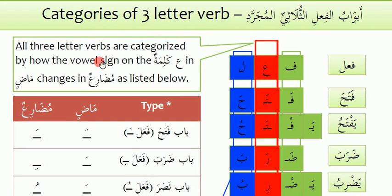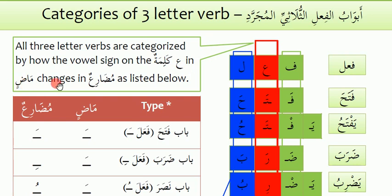All three letter verbs are characterized by how the vowel sign on the Kalma in Mazi — meaning in past tense — changes into Muzara, meaning in present tense. This is how we can change to the present tense or the future tense.